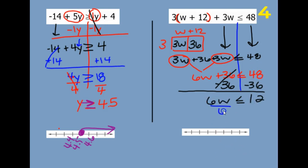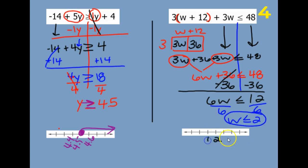12 — then divide by 6 on both sides, and we get W is less than or equal to — well, 12 divided by 6 is 2. I'm going to put a 2 on my number line: 1, 2, 3. This has an equal to, so it's a closed circle. And then like an L, less than 2, the arrow towards 1 — so to the left.